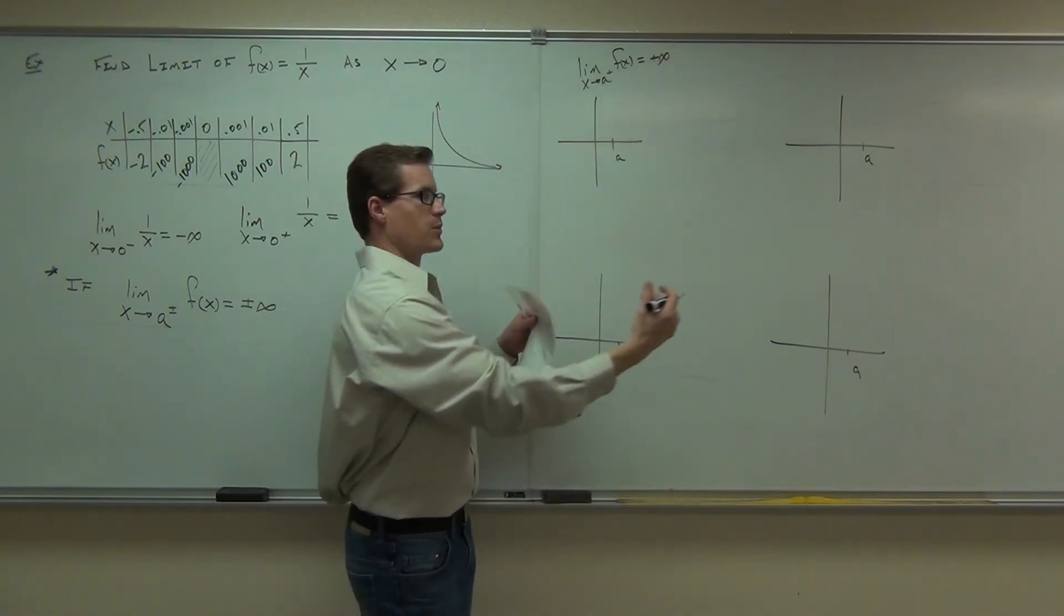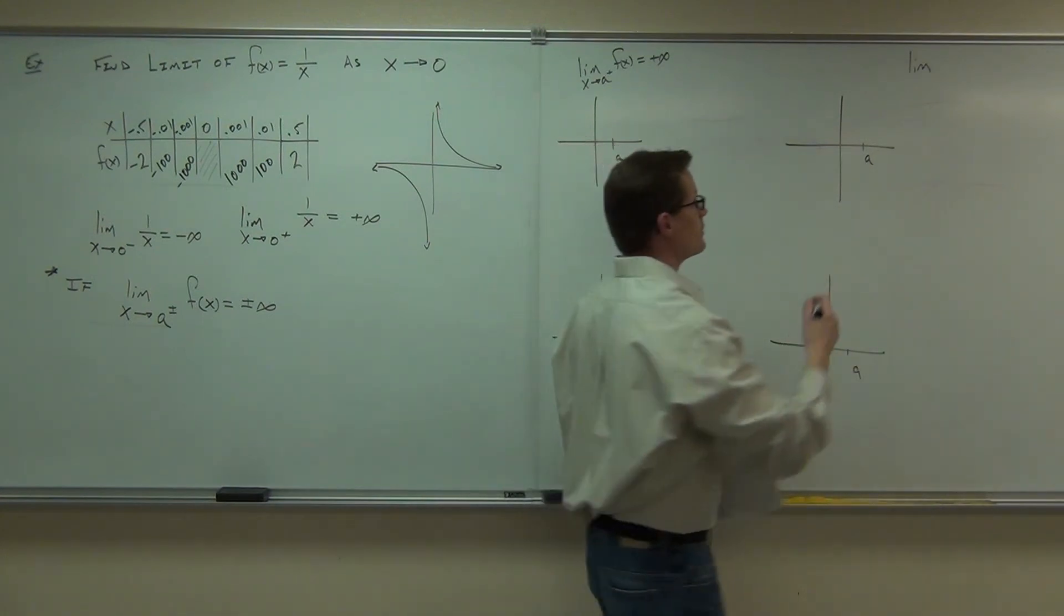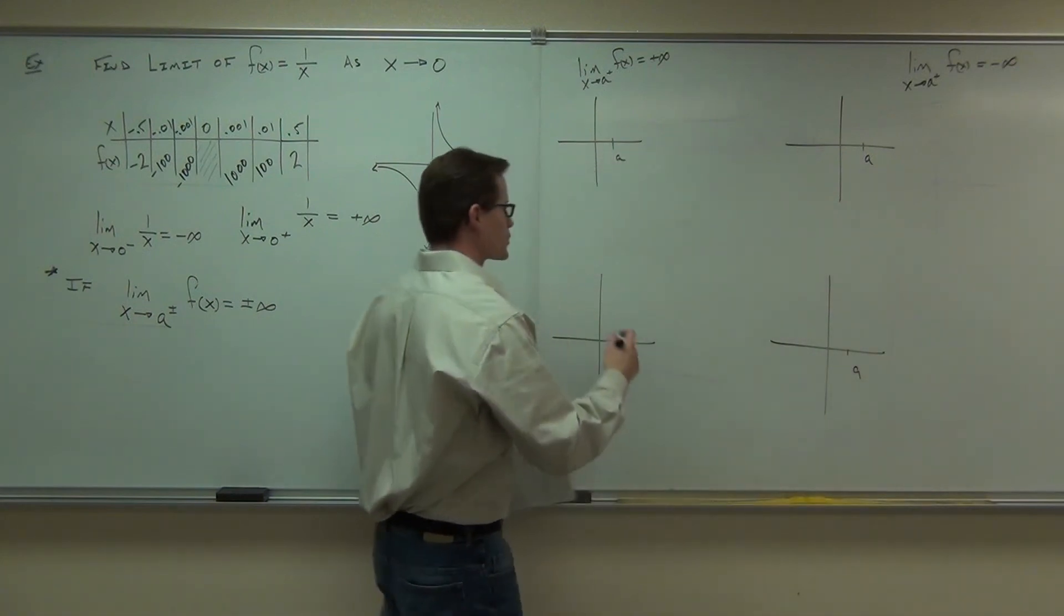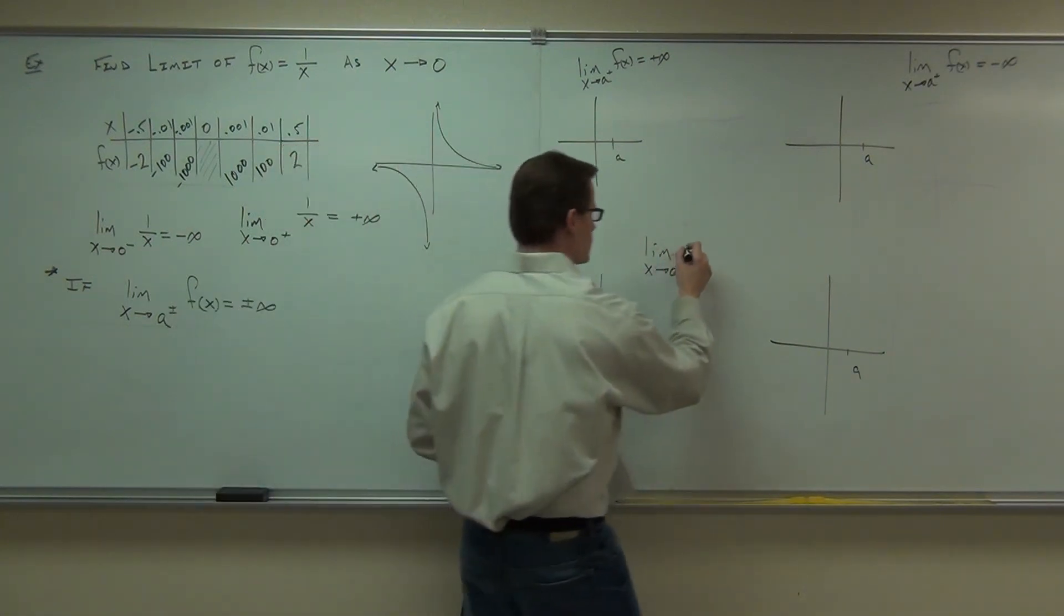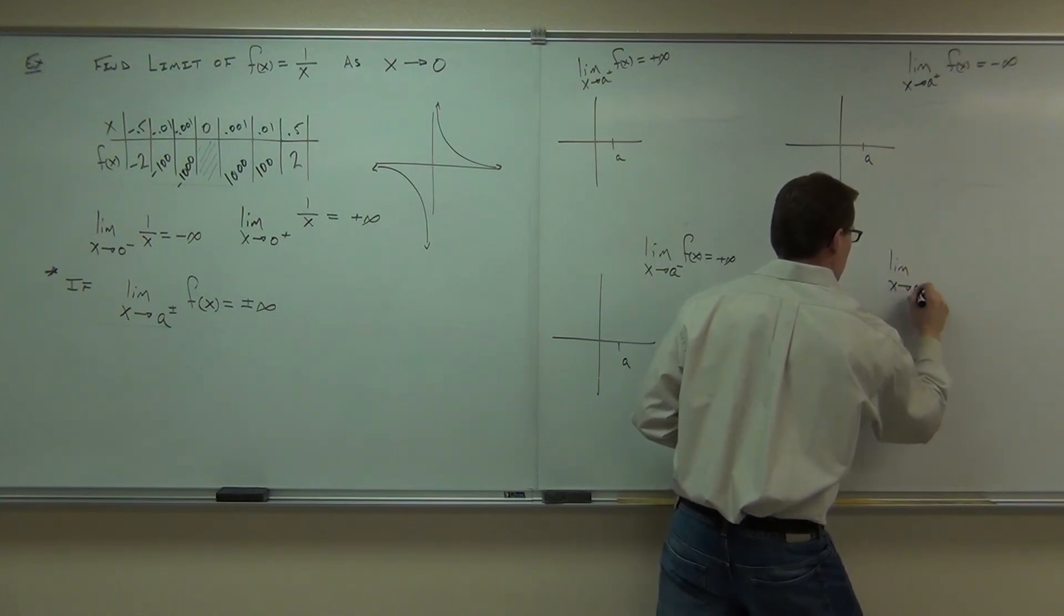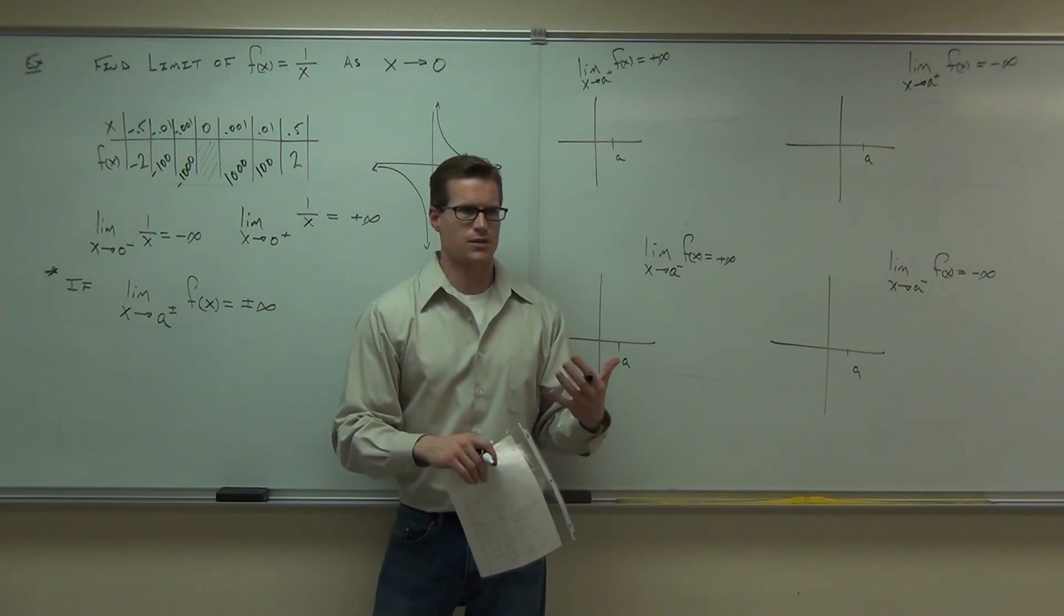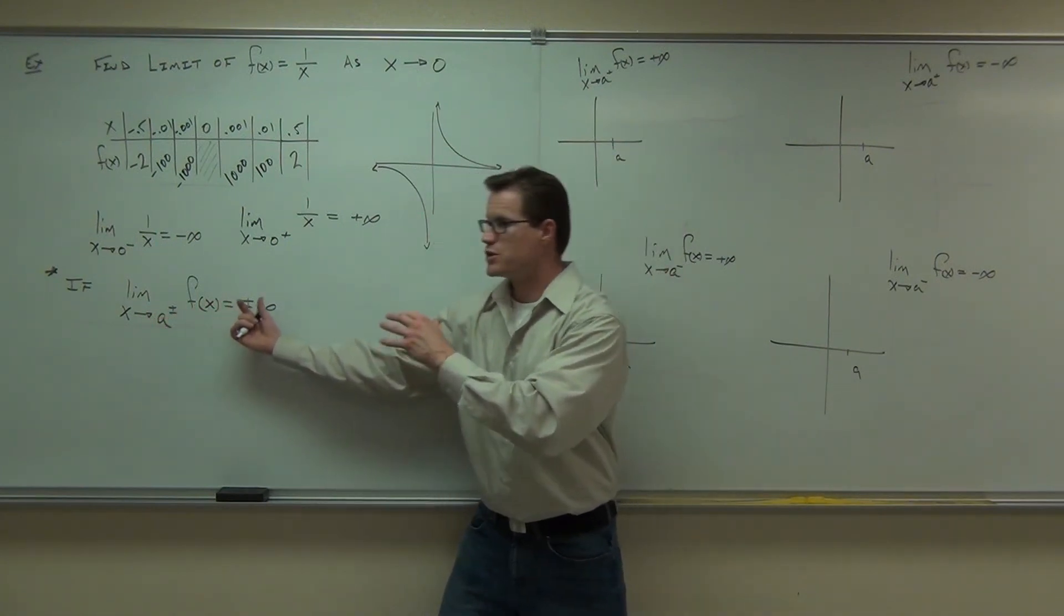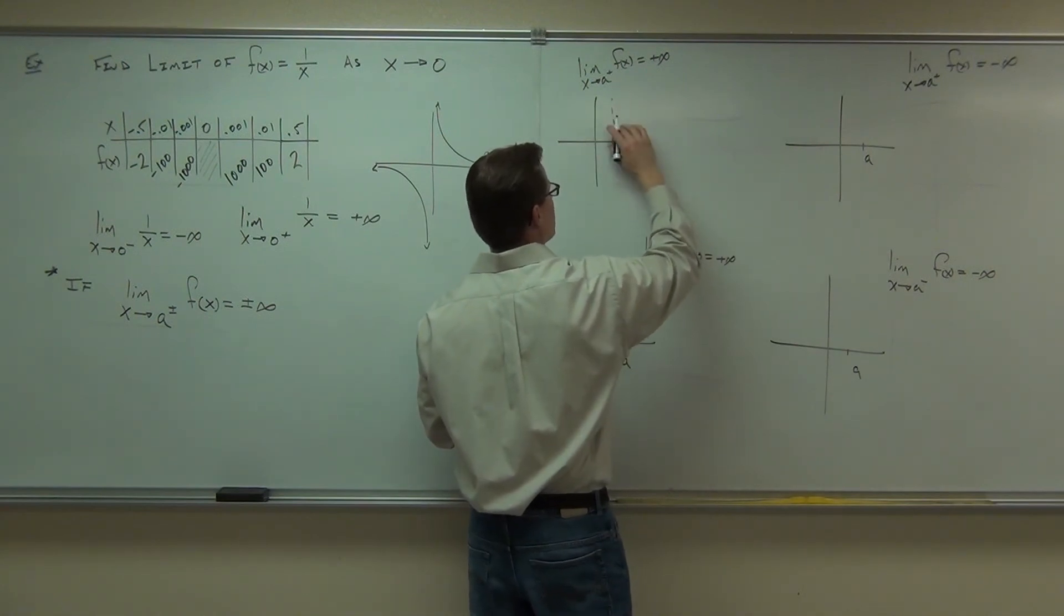So one case is, what happens if we approach a from the right and we're going to positive infinity? Another case would be, what happens if we approach a from the right and we go to negative infinity? Another case would be, well, what would happen if we went, if we did the both rights, right, from the right, if we went to a from the left and went to positive infinity? Or what would happen if we went to a from the left and gave us negative infinity? Would you agree those are all four permutations, all four cases of this? In either case, we just talked about this. If your function is going to positive infinity, when x is going to a from the left to the right, you're going to have an asymptote. So every one of these is going to be an asymptote.